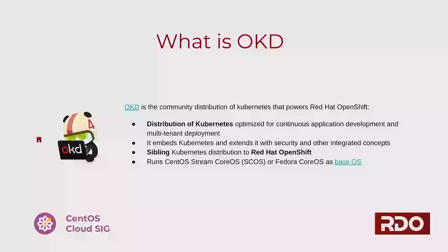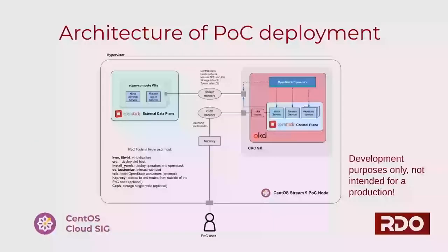Briefly about OKD: OKD is the community distribution of Kubernetes that powers Red Hat OpenShift. This distribution is optimized for continuous application development and multi-tenant deployment. It embeds Red Hat OpenShift and is extended with security features and integration concepts to make life easier. OKD calls itself a sibling Kubernetes distribution to Red Hat OpenShift, and it runs on CentOS CoreOS or Fedora CoreOS as its base operating system.